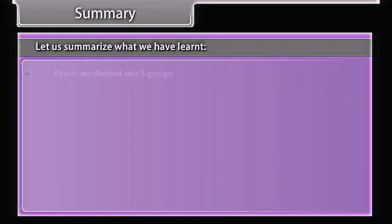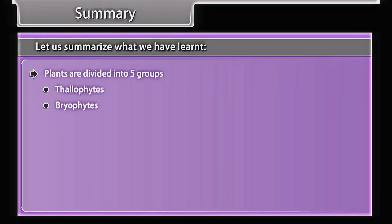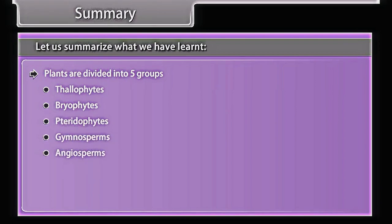Plants are divided into five groups: Thallophytes, Bryophytes, Pteridophytes, Gymnosperms, and Angiosperms.